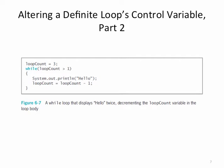For example, LoopCount equals 3, while LoopCount is greater than 1. Notice that 3 is greater than 1, so we're going to loop. System.out.println hello. LoopCount equals LoopCount minus 1. We're subtracting 1 each time through the loop. Hello will be printed twice because we start when LoopCount equals 3. We print hello, LoopCount becomes 2. 2 is still greater than 1, so we print hello again. LoopCount equals LoopCount minus 1, so LoopCount becomes 1. 1 is not greater than 1, so we are done, and we've printed hello twice.